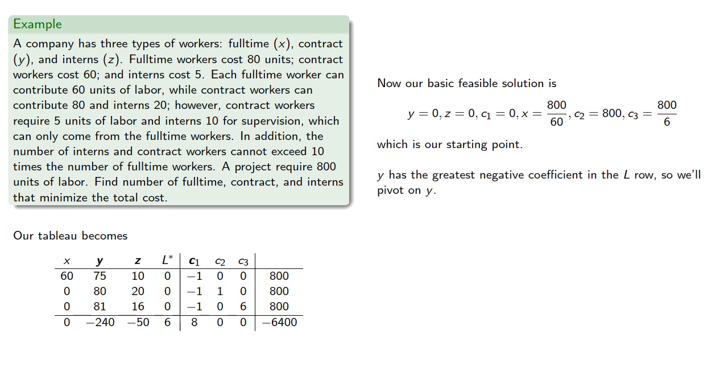Now y has the greatest negative coefficient in the L row, so we'll pivot on y. The quotients of the constant and the coefficient of y are... So we'll pivot on the third row, making y a basic variable, and c3 free. And so our tableau becomes...